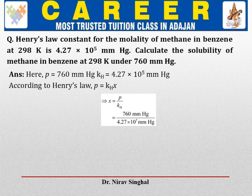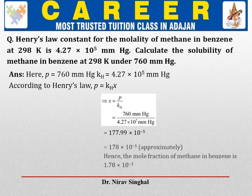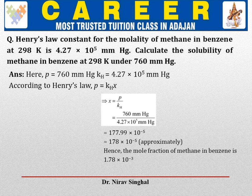The value of P provided is 760 and KH is 4.27 × 10⁻⁵ mm Hg. So the answer will become 177.99 × 10⁻⁵, which we can also write as 178 × 10⁻⁵ or 1.78 × 10⁻³.